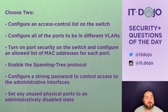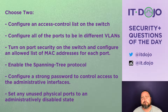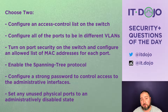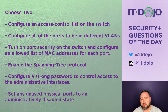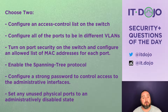The first choice says configure an access list on the switch. If the switch is just a layer 2 switch — which we don't know — or a layer 3 switch, it could support an access control list, but a layer 2 switch is not going to support that. The question didn't give us any indication as to what kind of switch it is, so I generally assume they mean a layer 2 switch unless they specifically tell me otherwise. So I don't think number one is the right answer.